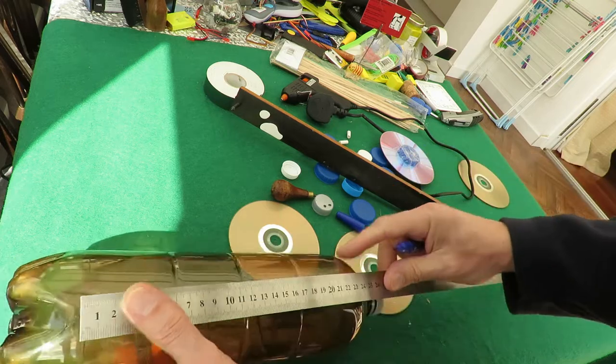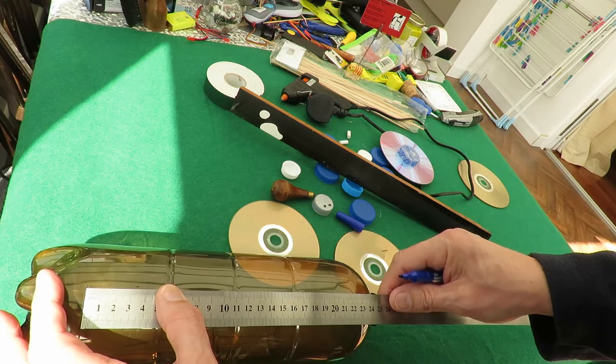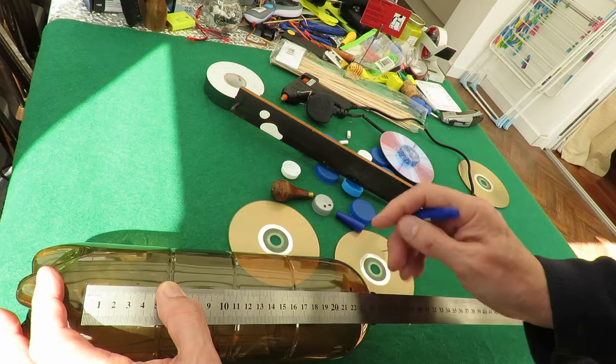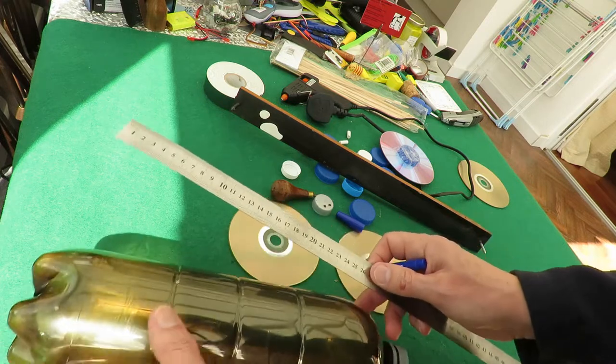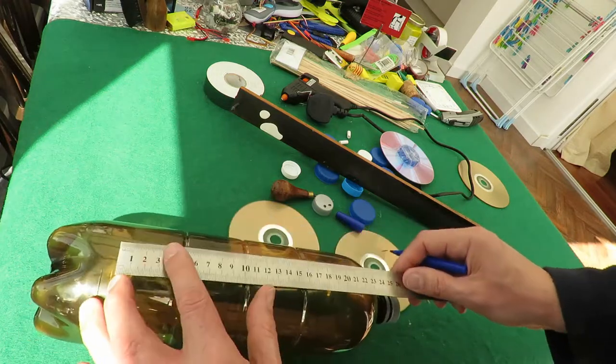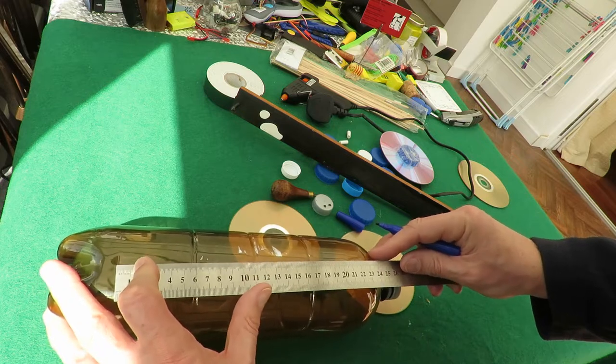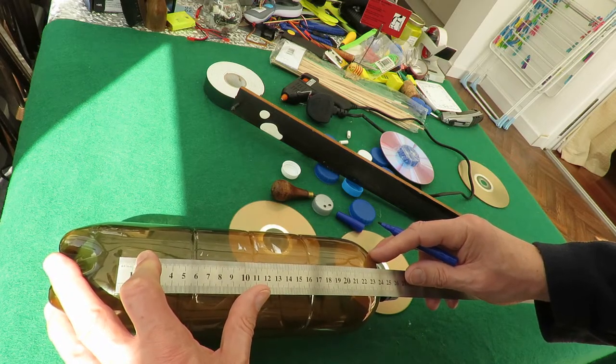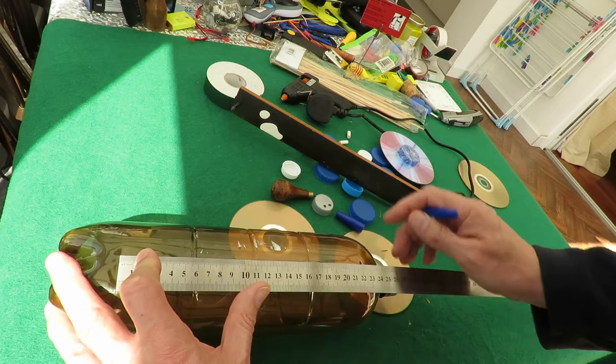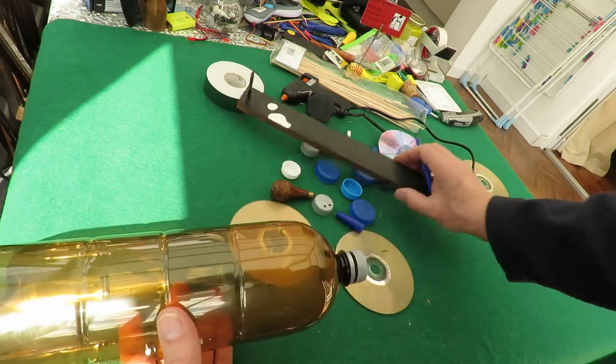If you have a felt tip pen, if you measure on carefully—now I happen to be measuring 22 centimeters here, but you can measure it to whatever you particularly want—but that is a convenient way of going straight along that line so that your wheels, or your axles, should be parallel.